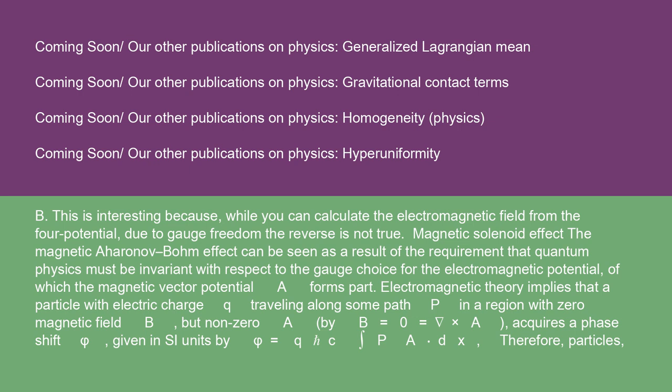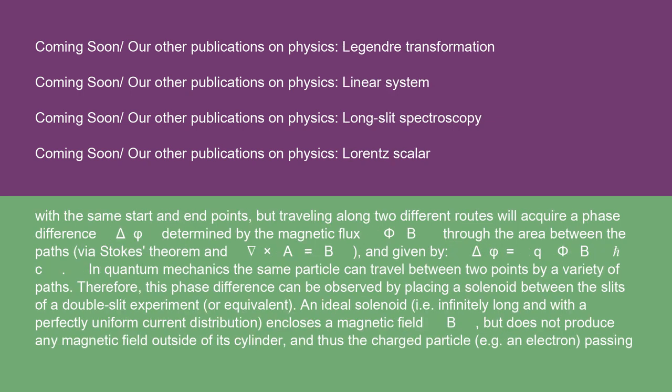Magnetic solenoid effect: The magnetic Aharonov-Bohm effect can be seen as a result of the requirement that quantum physics must be invariant with respect to the gauge choice for the electromagnetic potential, of which the magnetic vector potential A forms part. Electromagnetic theory implies that a particle with electric charge Q traveling along some path P in a region with zero magnetic field B but non-zero A (by B = 0 = ∇ × A) acquires a phase shift Φ, given in SI units by Φ = Q/ℏc ∫_P A·dx. Therefore, particles with the same start and end points but traveling along two different routes will acquire a phase difference ΔΦ determined by the magnetic flux Φ_B through the area between the paths, via Stokes' theorem and ∇ × A = B, and given by ΔΦ = QΦ_B/ℏc.